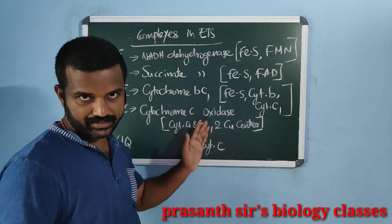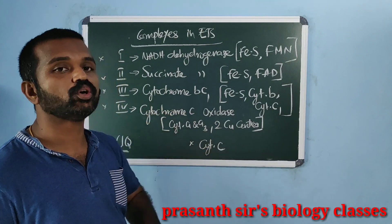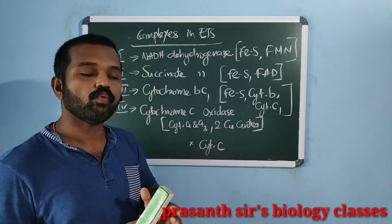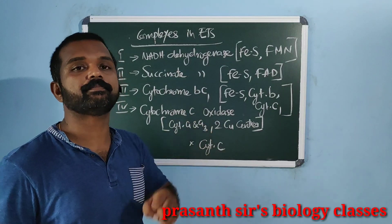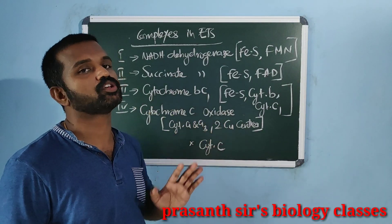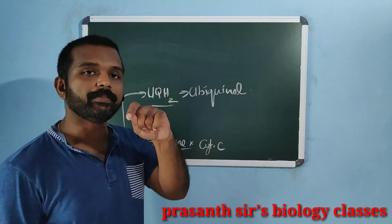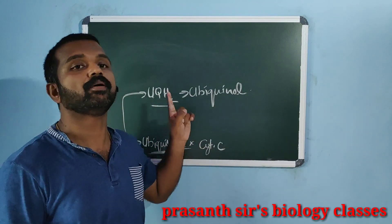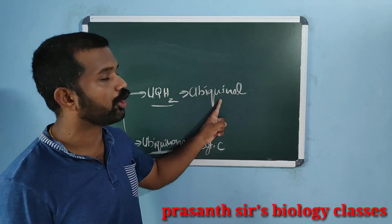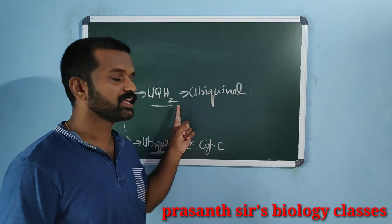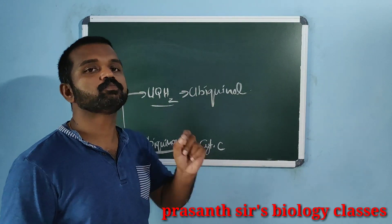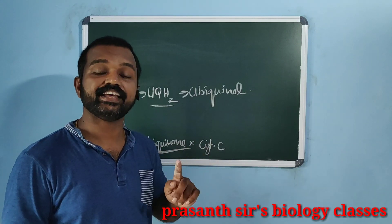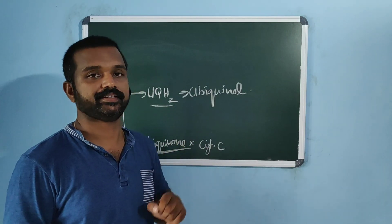Along with these complexes, two other electron carriers are also present in the inner mitochondrial membrane. One is located within the membrane — ubiquinone, whose reduced form is known as ubiquinol, UQH2. The other is cytochrome C, a small protein located on the outer surface of the inner mitochondrial membrane.